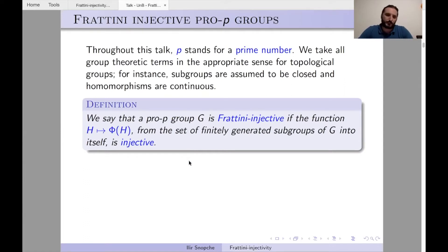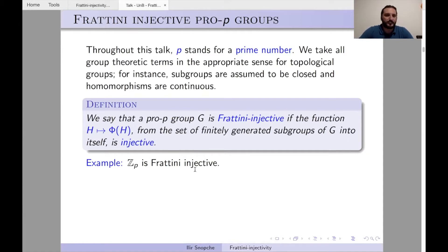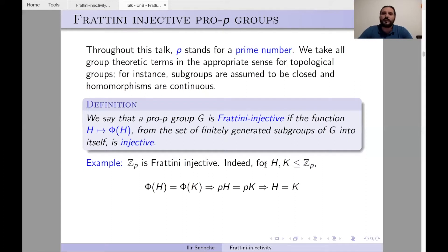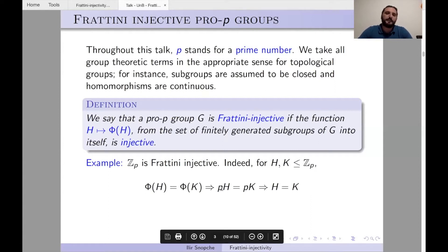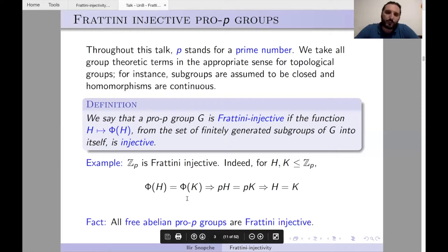Do we know examples of Frattini-injective groups? The simplest one is ℤ_p, which is Frattini-injective. Since Φ(ℤ_p) = pℤ_p and every non-trivial subgroup of ℤ_p is isomorphic to ℤ_p, if Φ(H) = Φ(K) then pH = pK, which forces H = K because ℤ_p is torsion-free. More generally, all free abelian pro-p groups are Frattini-injective.